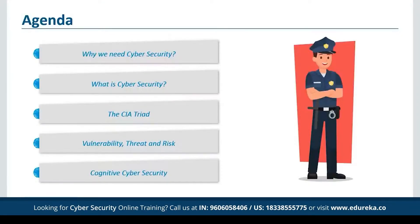Before we begin, let me brief you all about the topics we're going to cover today. We're going to ask three questions important to cyber security. Firstly, we're going to see why cyber security is needed. Next, we're going to see what exactly is cyber security, and in the end, I'm going to show you through a scenario how cyber security can save a whole organization from organized cybercrime. So let's get started.